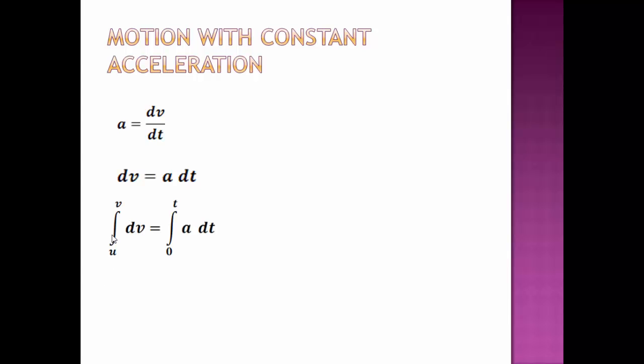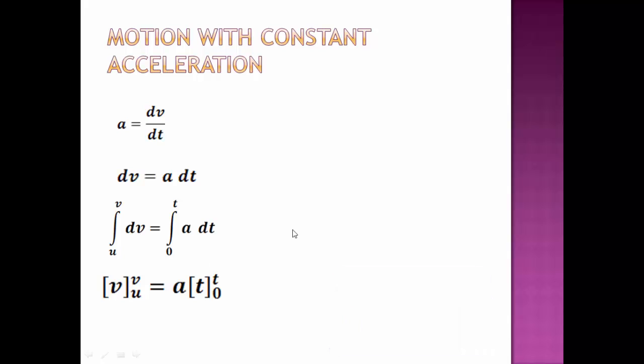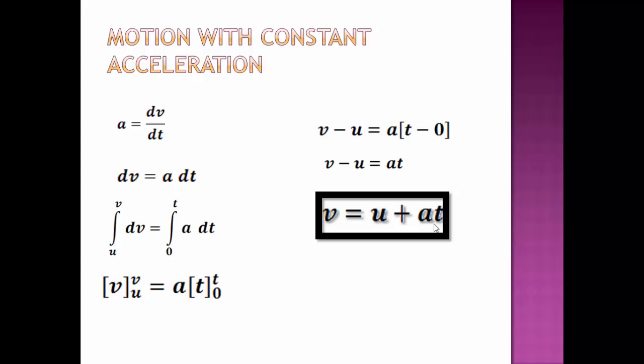Integrating on both sides. Now when we integrate on left side, the velocity will vary from initial velocity u to final velocity v in the time duration 0 to t. So on the left side the integration will be v. On the right side, since acceleration is constant, it comes out of the integration sign. So integration of dt is t, it goes from 0 to t. Now we apply the upper limits and lower limits on the respective sides. So on the left side we get upper limit v minus u will be equals to a into t minus 0. Therefore v minus u equals to a t or v equals to u plus a t.